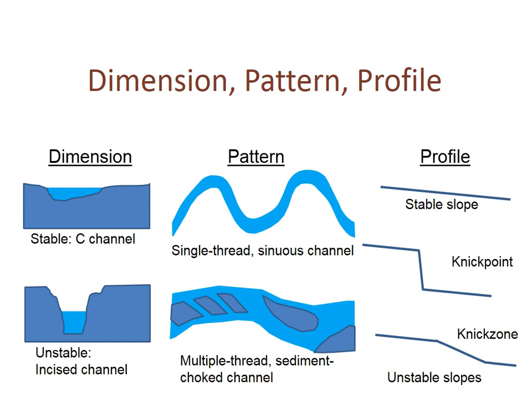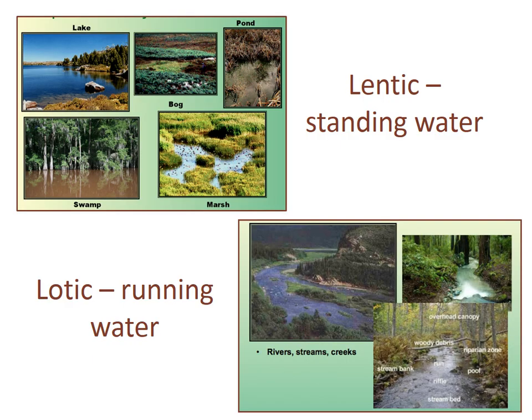Fluvial geomorphology is the study of form and function of streams and the interaction between the streams and the landscape around them. It includes consideration of channel dimension, channel pattern, and channel profile, augmented by a consideration of channel roughness. Ecologists classify water bodies as either lentic or lotic. Lentic, also known as lacustrine ecosystems, is a system characterized by still water, such as lakes, ponds, and swamps.